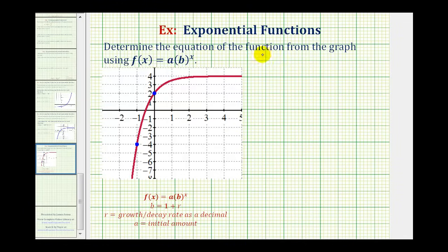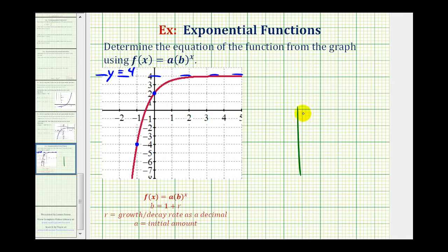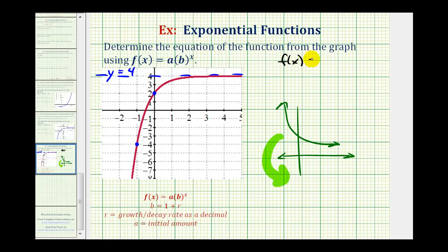We want to determine the equation for the exponential function from the graph using the form f(x) = a times b raised to the power of x. This one is more involved than other examples because the graph has a horizontal asymptote of y equals positive four, which means the exponential function must be shifted up four units. We should also recognize this appears to be exponential decay reflected across the x-axis, so our function will be in the form f(x) = a times b to the power of x, plus four.